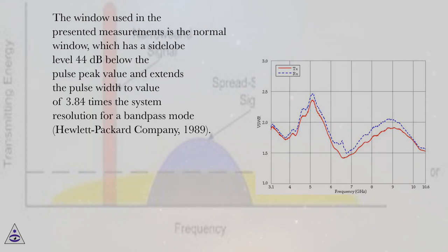The window used in the presented measurements is the normal window, which has a sidelobe level 44 dB below the pulse peak value and extends the pulse width to value of 3.84 times the system resolution for a bandpass mode, Hewlett Packard Company, 1989.